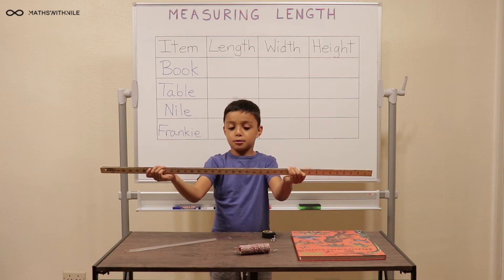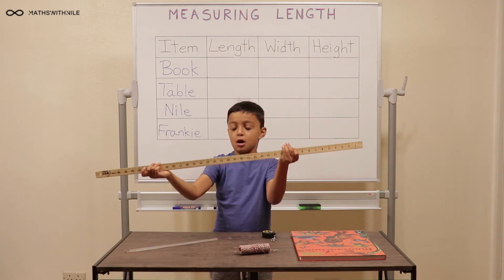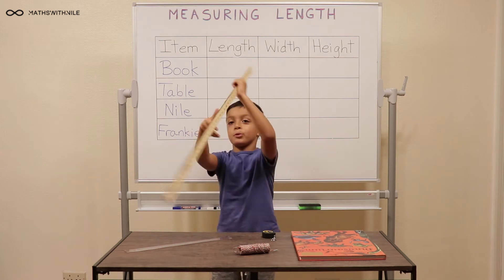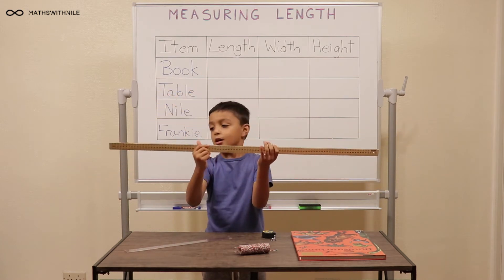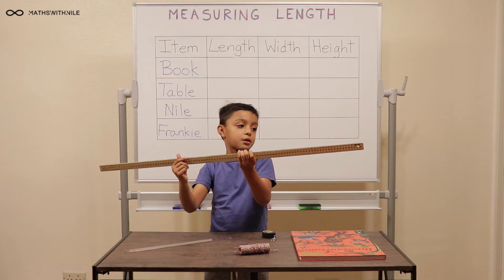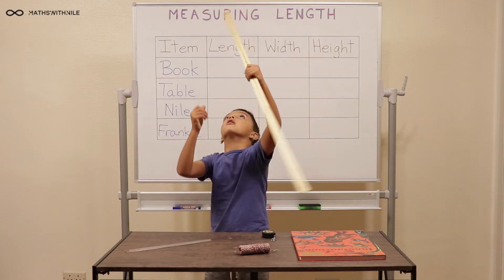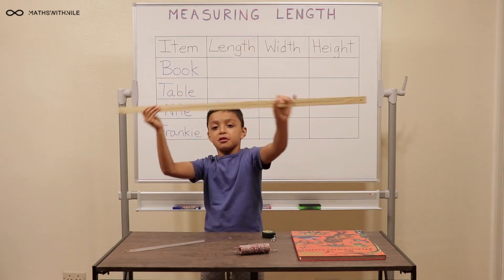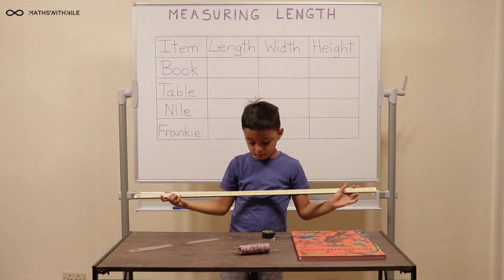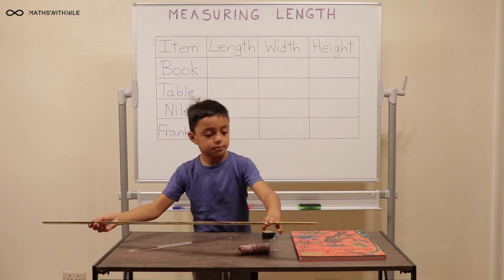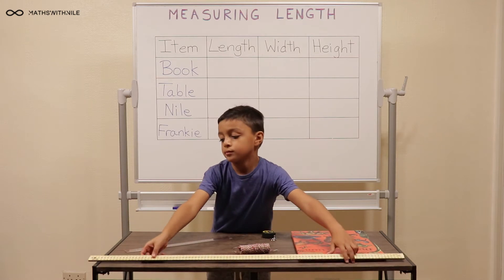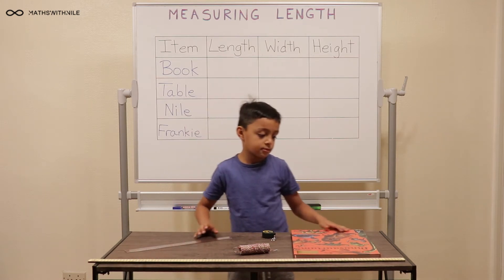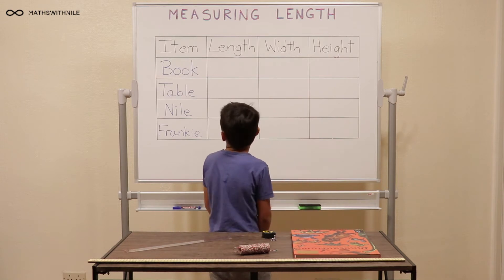Do you know how many centimetres there are in a metre? About 100. I'm showing you the inch side, and on this there are 39 inches. So you have a list of items on the board that you're going to be measuring. Can you go through the names on the top row?